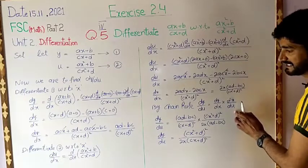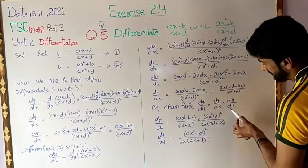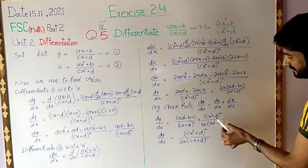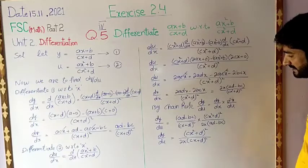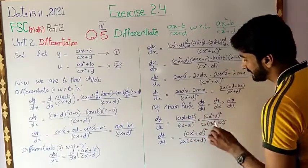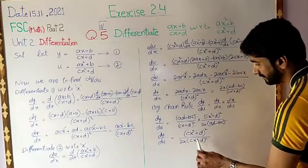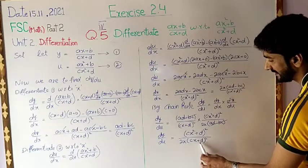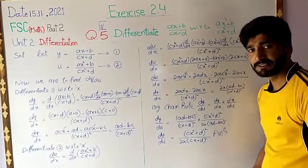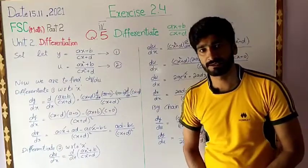Using the chain rule, dy/du equals dy/dx multiplied by dx/du. The reciprocal of du/dx gives dx/du equal to (cx square plus d) whole square over 2x(ad minus bc). The (ad minus bc) terms cancel, and the final answer is dy/du equal to (cx plus d) whole square over 2x(cx square plus d) whole square. This lecture is completed. In the next lecture we learn Exercise 2.5. Take care.